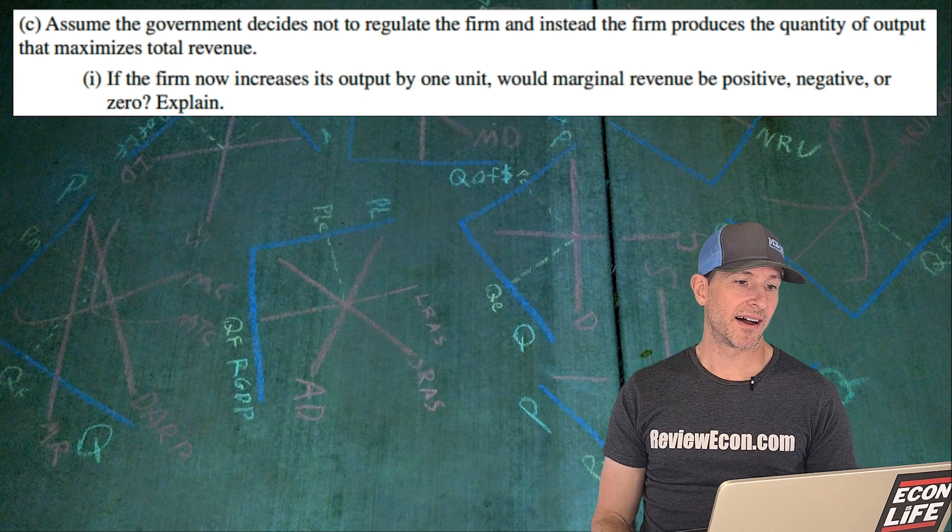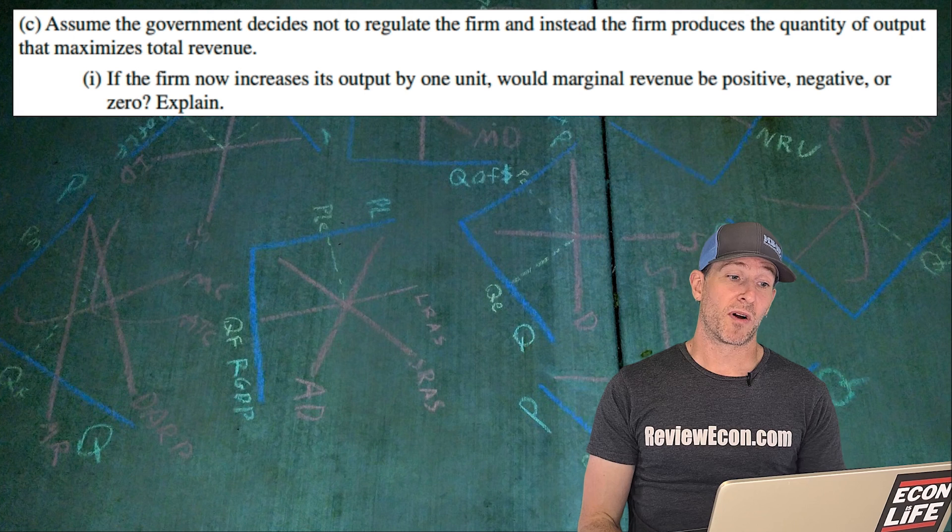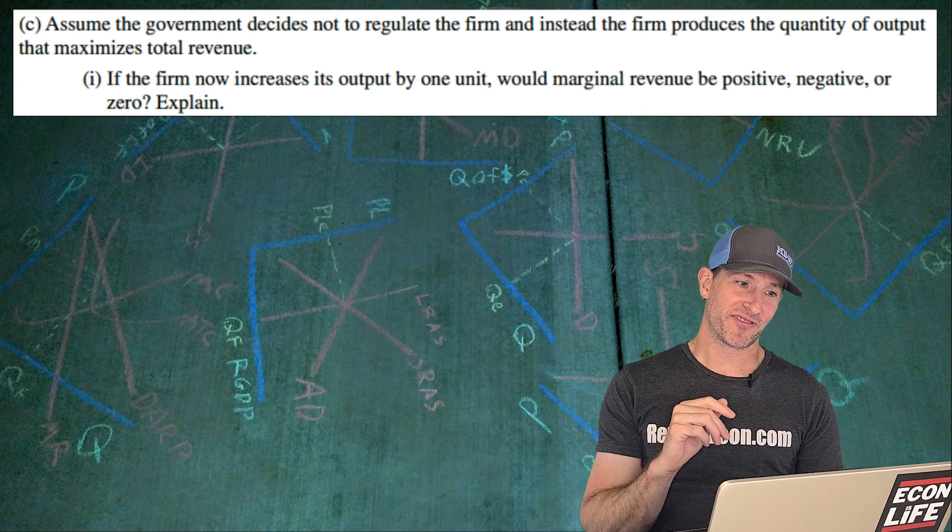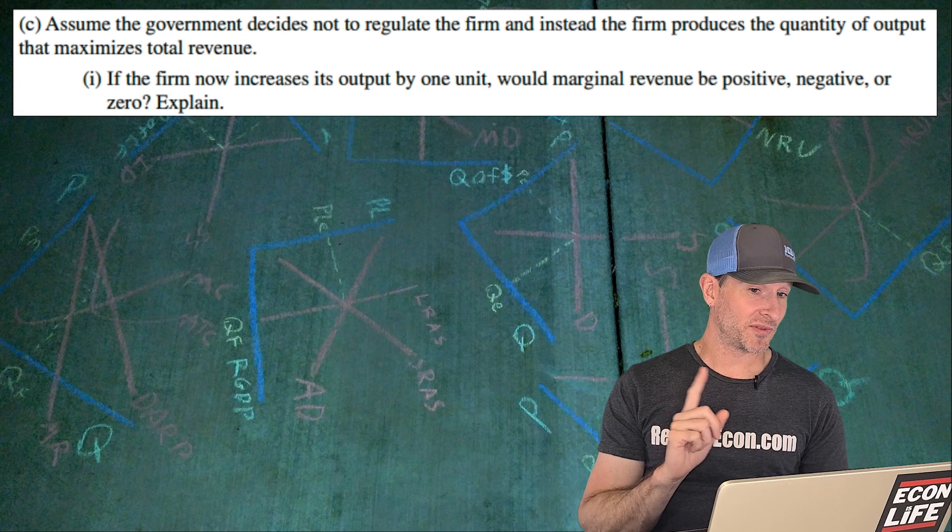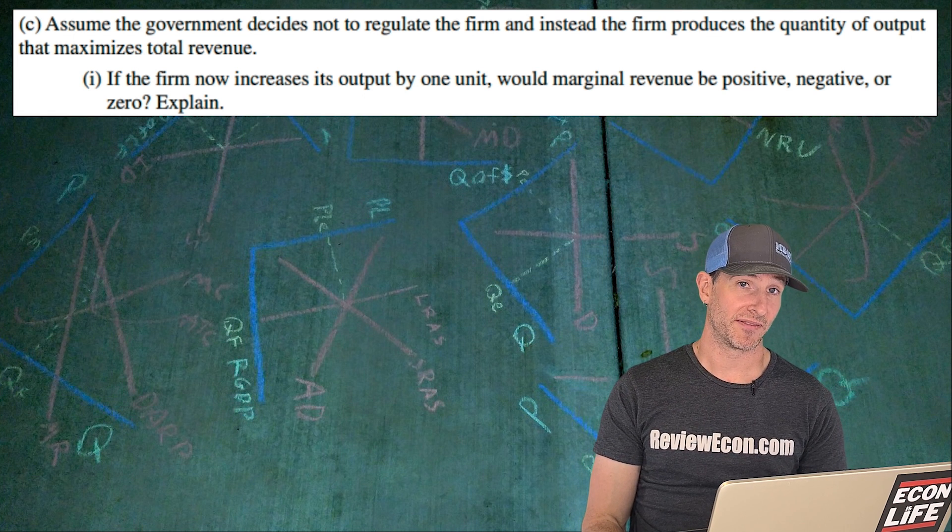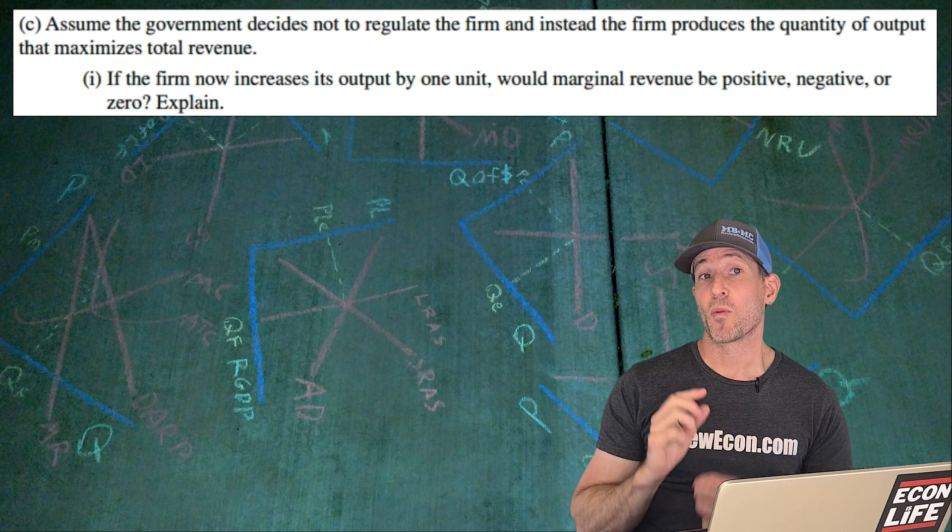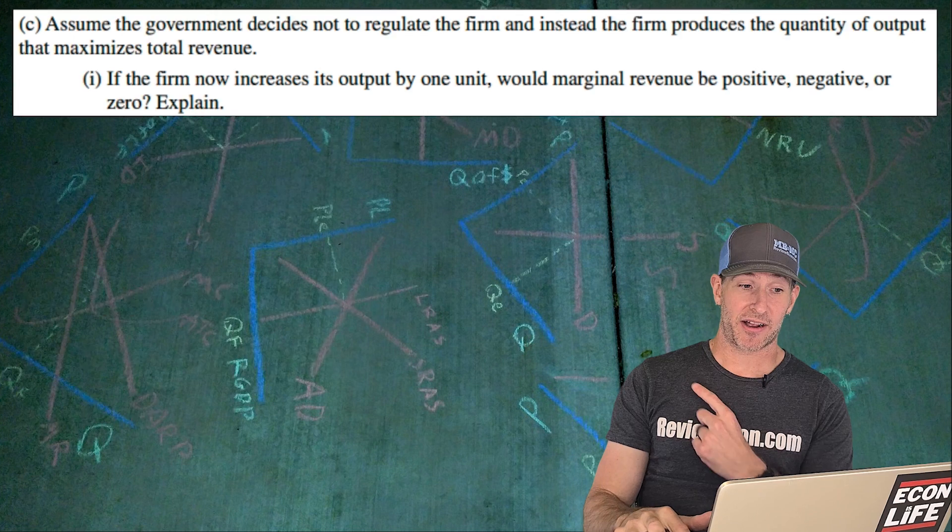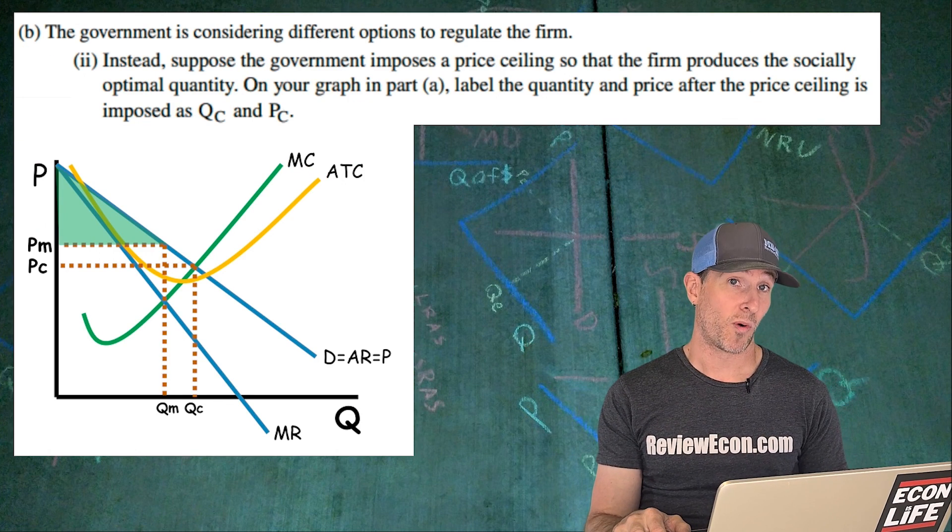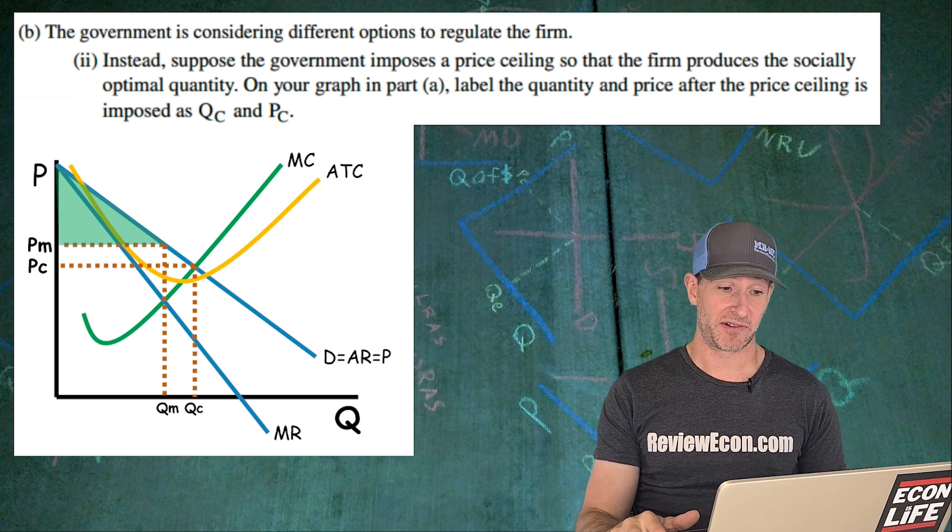Next for C. If the firm is now going to increase its output by one unit, would marginal revenue... Oh, excuse me. So assume that... Got to back up for a second. Assume that the government decides not to regulate the firm. And instead, the firm produces the quantity of output that maximizes total revenue. Now, maximizing total revenue means that they are producing where marginal revenue is zero. So back on the graph, we just saw it's where that marginal revenue curve intersects the quantity axis. That is where the total revenue maximizing quantity would be.